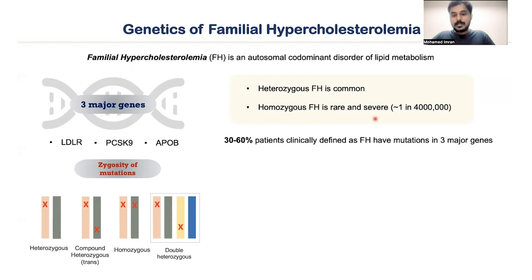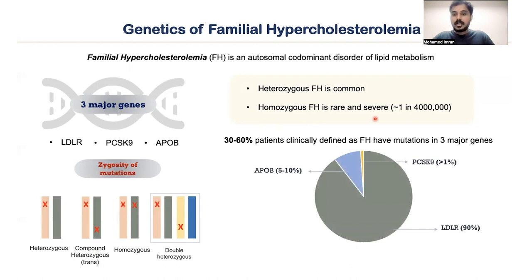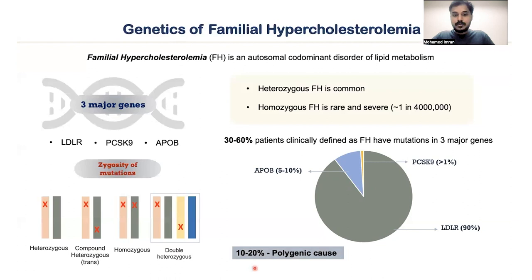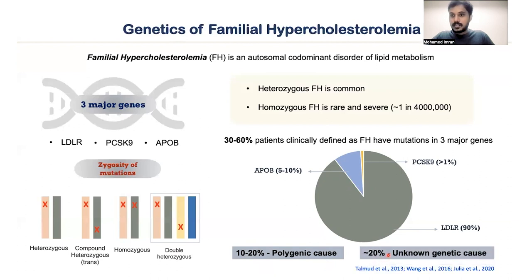Almost 30 to 60 percent of patients who are clinically defined as FH have mutations in these three genes. Among these, LDLR constitutes more than 90% of the mutations, followed by APOB at 5 to 10%, and PCSK9 being the least at around 1%. Besides this, 10 to 20% of patients may have polygenic origin, and another 20% of cases have genetic causes that are unknown or yet to be discovered.